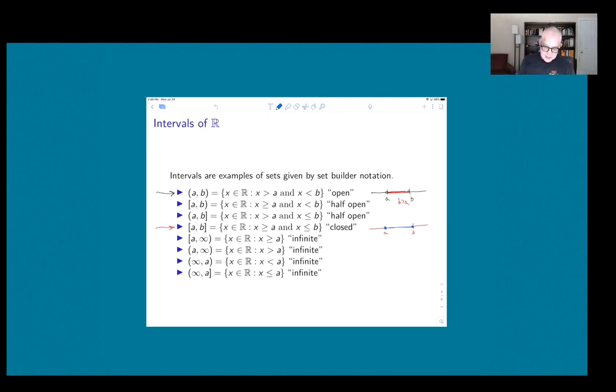And then you can see that you can mix these. You can put a parenthesis on one side and a square bracket on the other. You use infinity to mean that you just take everything. So, infinity to a...if here's the real line, this should be minus infinity, by the way. This should be plus infinity. Sorry about that.